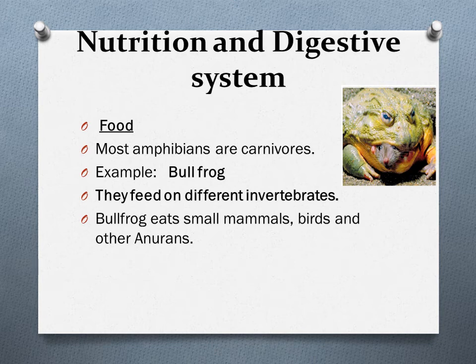Most larvae are herbivores that feed on algae and other plant matter. Most amphibians locate their prey by sight and simply wait for prey to pass by. Olfaction plays an important role in prey detection in aquatic salamanders and caecilians.